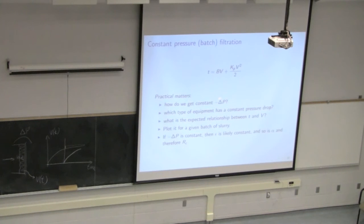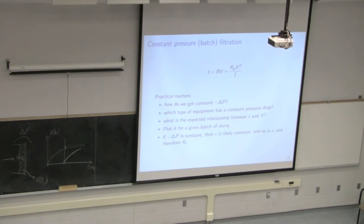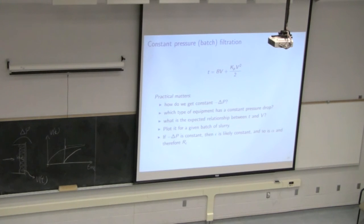Some practical notes: we've discussed getting constant delta P with a simple feedback loop. Which type of pump provides constant pressure? A peristaltic pump or positive displacement pump provides constant flow, so a positive displacement pump would not be suitable for constant pressure. A centrifugal pump works well — depending on where you are on the pump curve, you can get a constant delta P. That's the typical unit used to provide feed in constant pressure filtration.